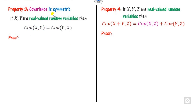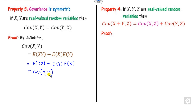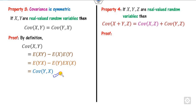Another property is that covariance is symmetric and satisfies a linear equality. The proof is simple: starting from any random variables x and y, we can write Cov(x, y) as Cov(y, x). That is the simple proof of the third property — covariance is symmetric.